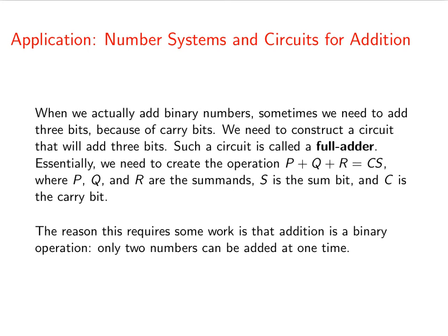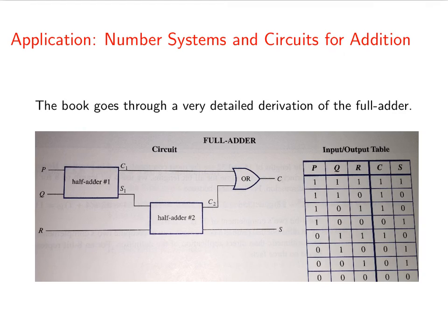The reason this takes some work is because binary is really just two numbers being added at once. So what we need to do is first add P and Q and then add the result to R. Once we have a half adder, we can put those together. The carry bits can be added together to get the final carry bit.